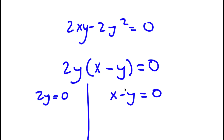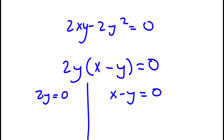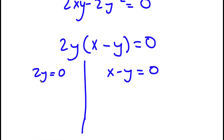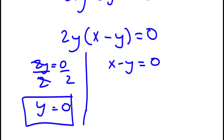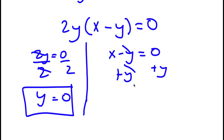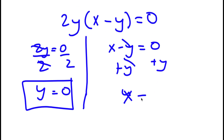For 2y equals 0, I simply divide both sides by 2, and I'm left with y is equal to 0. For x minus y equals 0, if I add y on both sides I get that x is equal to y.